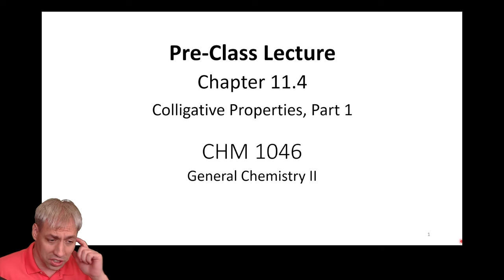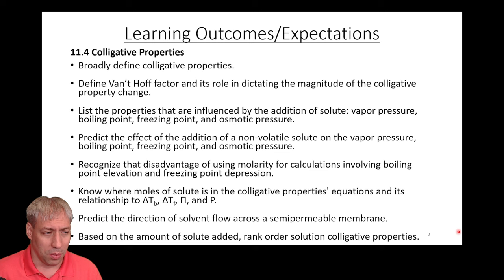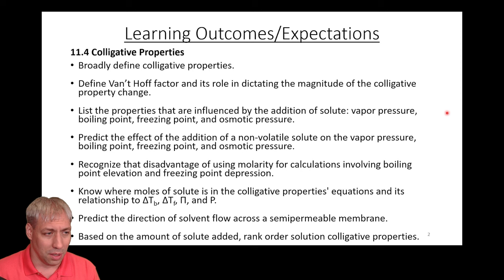Continuing our journey in chapter 11, we're going to start talking about colligative properties, and we've actually partitioned this into two parts. Here are the learning goals and outcomes expectations for colligative properties — this is for both part one and part two. Part one will be this video, part two will be the next video. It'll be partitioned into class periods, but it didn't make sense to partition the learning outcomes and expectations, so this is for both of those lecture periods.